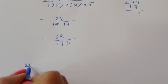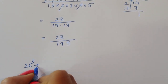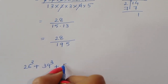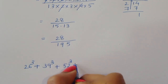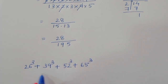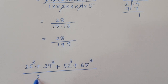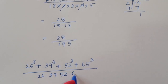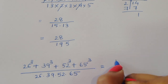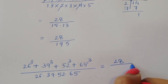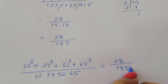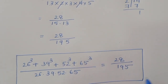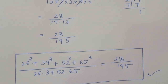So we can say: 26 power 3 plus 39 power 3 plus 52 power 3 plus 65 power 3, divided by 26 times 39 times 52 times 65, is equal to 28 divided by 195. This is the final solution. Thank you.